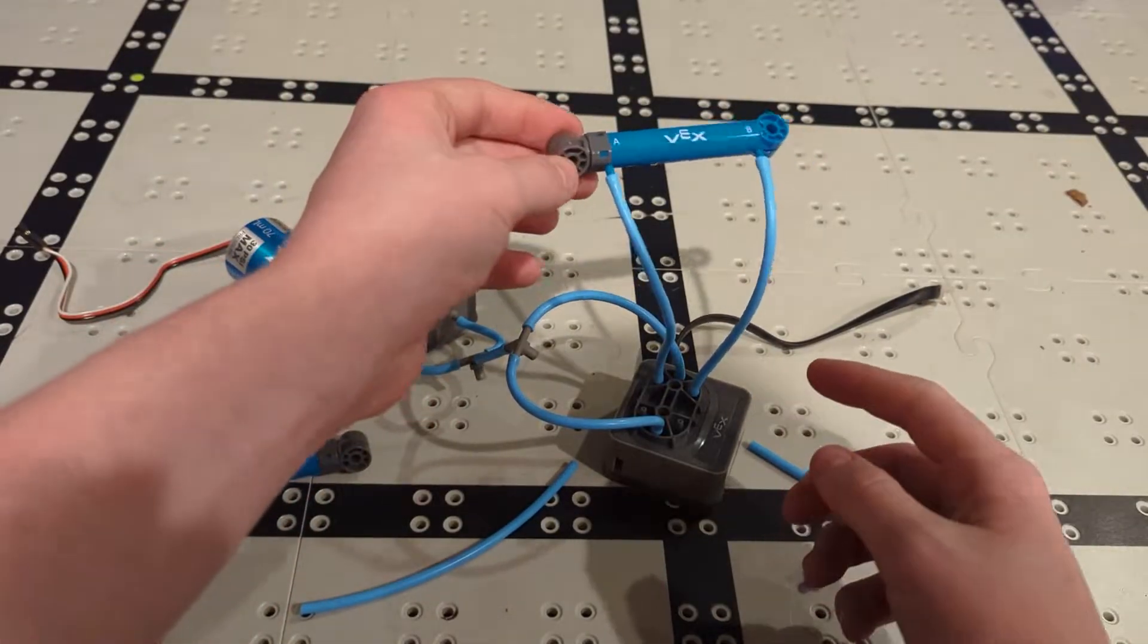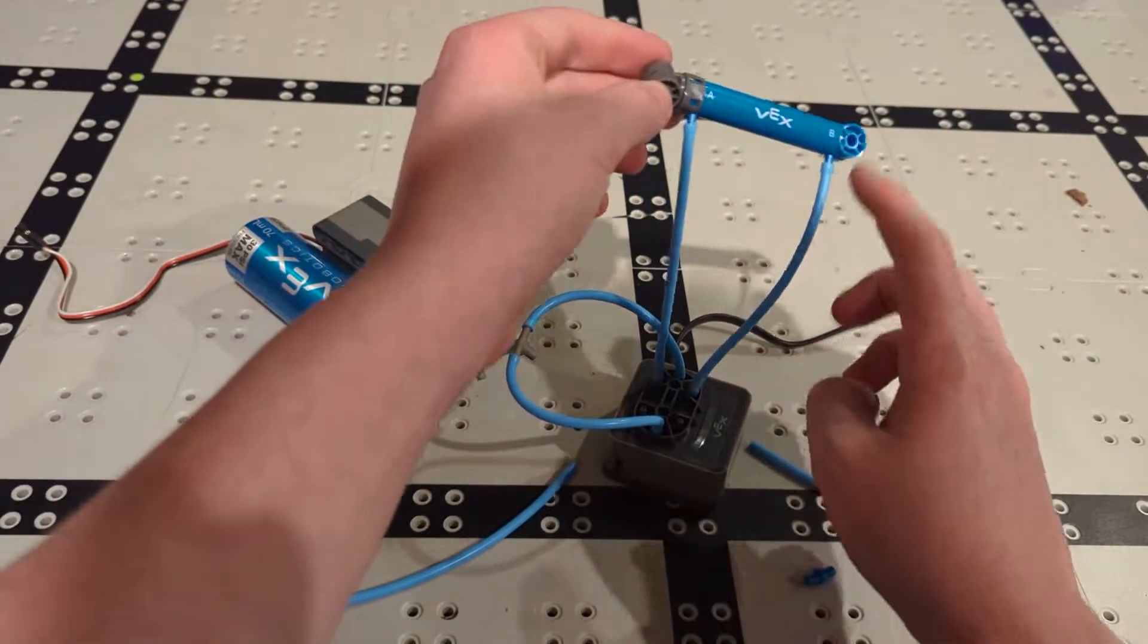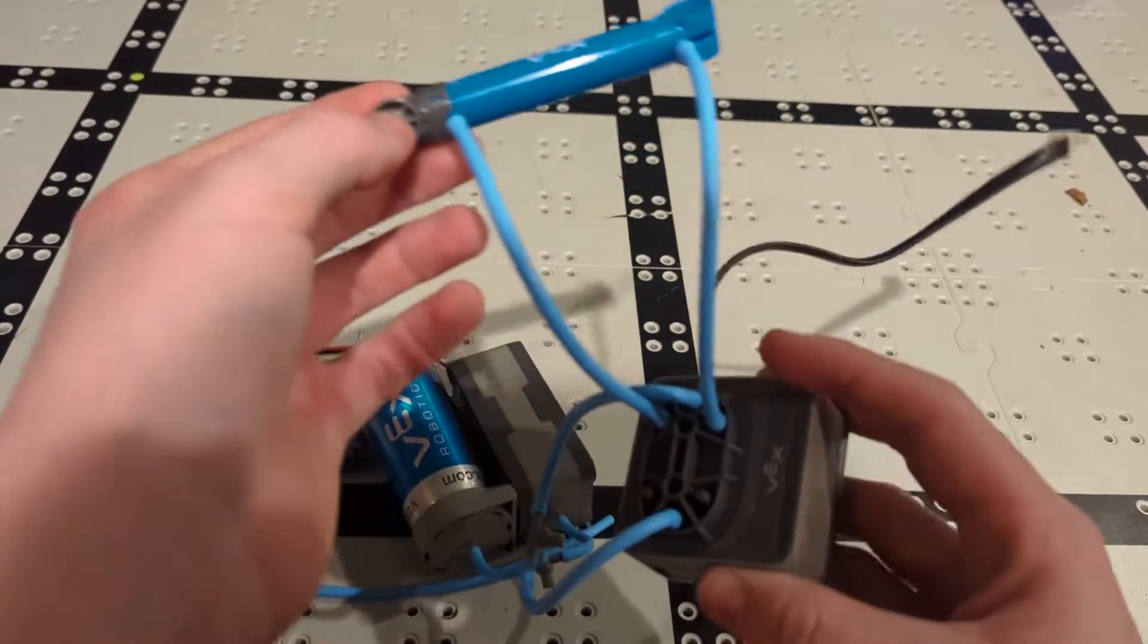All right, so we got our first cylinder attached. And basically what we did was we put these two lines coming out of the pump. And this is a pretty important part.